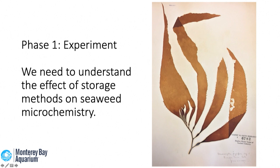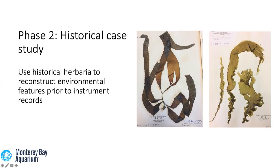Our study had two phases. Phase one was an experiment: we wanted to use historical 100-year-old specimens pressed on old paper, but first we needed to know — were these specimens actually documenting the ocean at that time? Or was there some effect of pressing that caused decay in their microchemistry? Or was there anything in the paper itself, like heavy metals from manufacturing, that would alter the seaweed differently than fresh-from-the-ocean specimens? Once we confirmed no such effects, we could proceed to phase two: using historical specimens to reconstruct environmental features prior to instrument records.